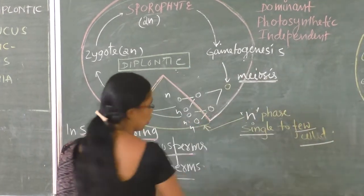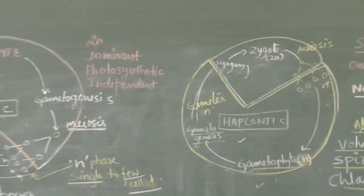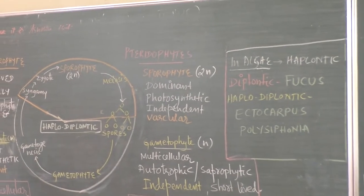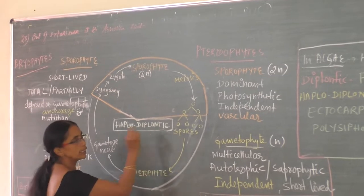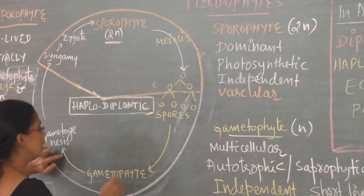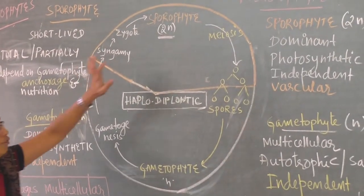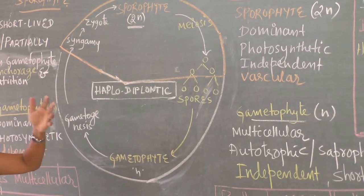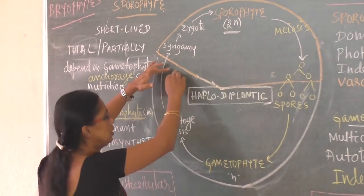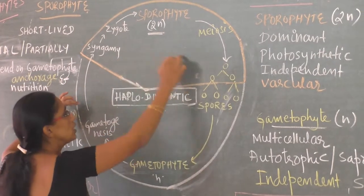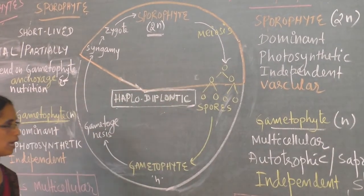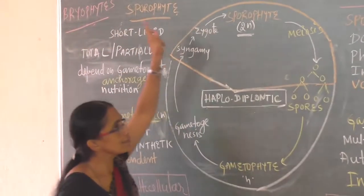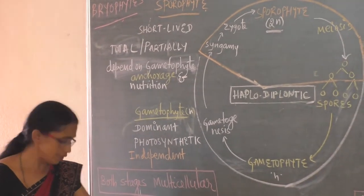The third life cycle is called haplodiplontic. In haplodiplontic, the haploid phase and diploid phase are roughly equal — about 50% each. This type is seen in bryophytes as well as pteridophytes.